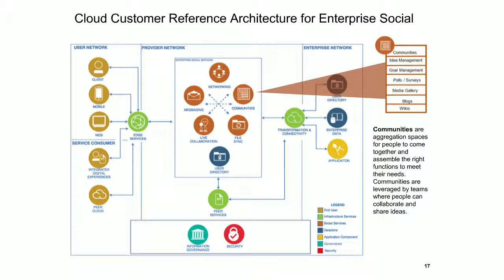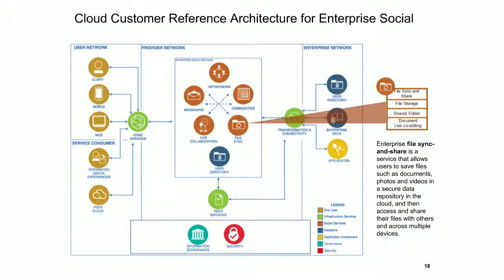The next component is file sync and share — storing files in folders, sharing individual files or folders, and doing live document co-editing so a number of people can work directly on the same document rather than having to take it offline and re-upload it. These are traditional capabilities extended with live co-editing of documents.